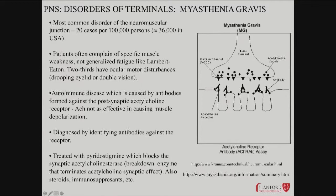Myasthenia gravis is also an autoimmune disease, caused by antibodies against the postsynaptic acetylcholine receptor. The immune system starts making antibodies that attack this postsynaptic receptor, inhibiting the ability of the acetylcholine receptors to respond to acetylcholine and open. The result is muscle weakness. The presynaptic terminal is perfectly fine and acetylcholine is being released, but there is a reduced response. You can look for antibodies against the receptor using standardized methods for measuring immunoreactivity from the patient's serum.